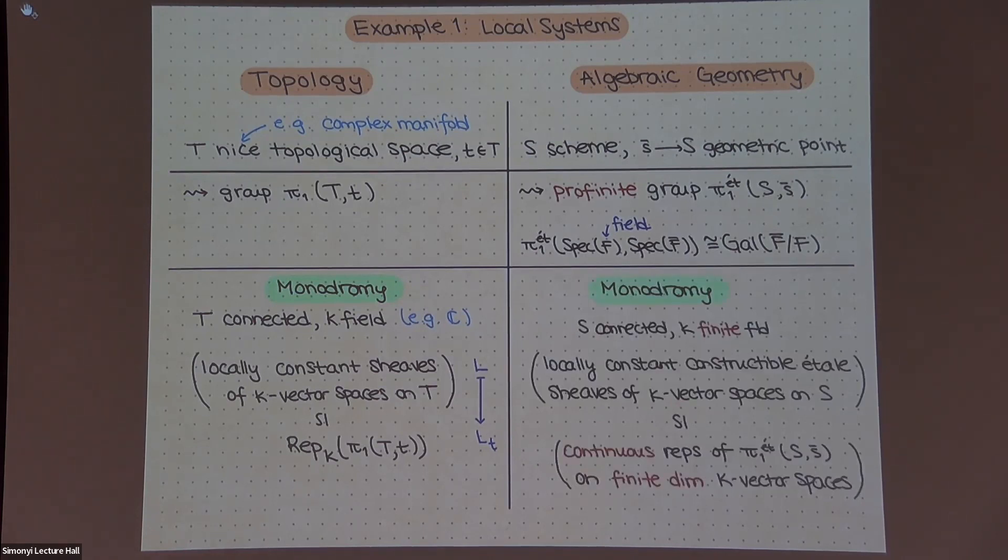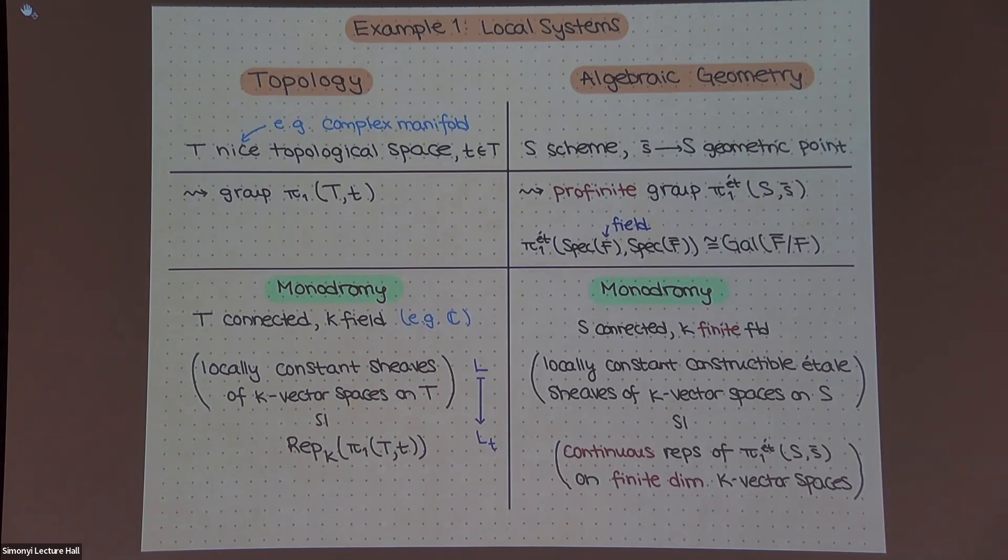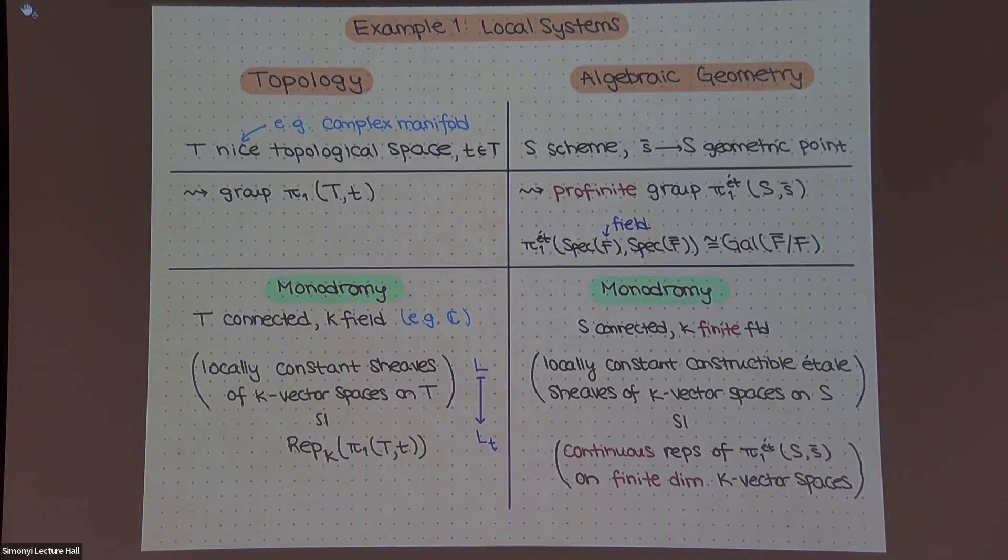And profinite, this means it's a topological group, but the topology is pretty nice. It's compact Hausdorff and totally disconnected. And why should it be profinite? Well, what it's meant to generalize is Galois groups of fields. So if you input a field into this, you get out the Galois group of automorphisms of some separable closure that fix the base. And this has a natural profinite topology because it's a limit of all of the finite Galois groups.